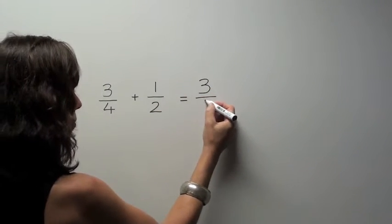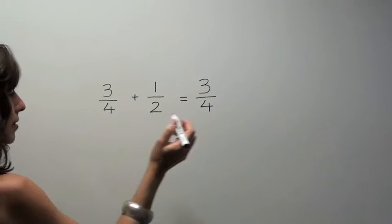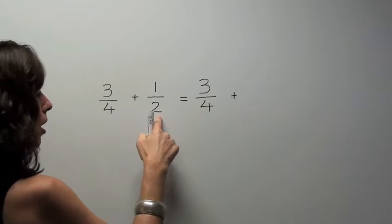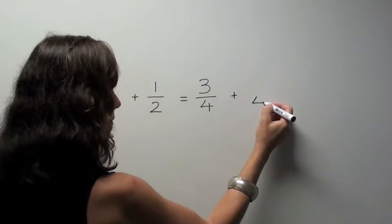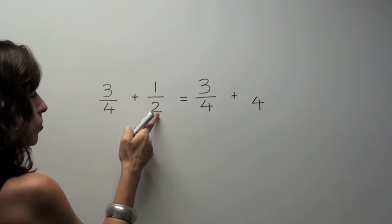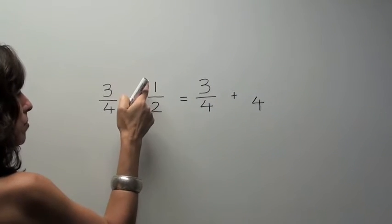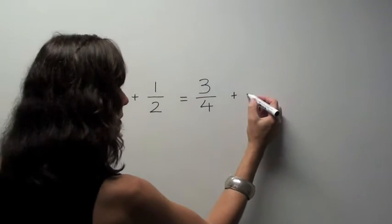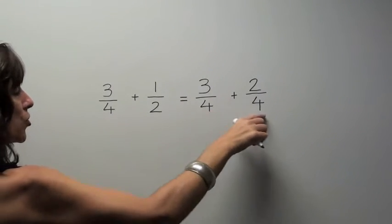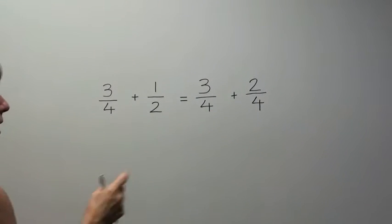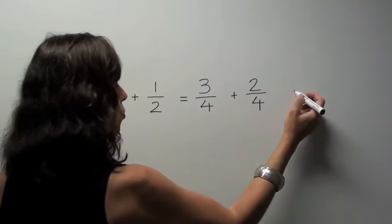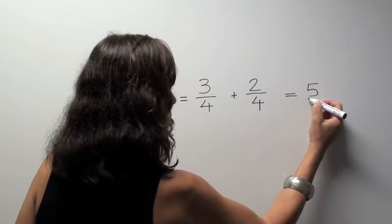This will now become 3 quarters. I can leave this the same. Plus, instead of leaving this as a 2, I multiply it by 2 to make it a 4. Now I have two denominators that are the same. I've multiplied the denominator by 2. I must multiply the numerator by 2. 1 times 2 is 2. Now I have two common denominators, denominators that are the same. I can simply add the numerators. 3 quarters plus 2 quarters equals 5 quarters.